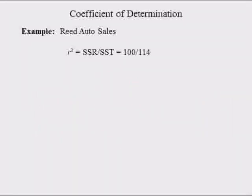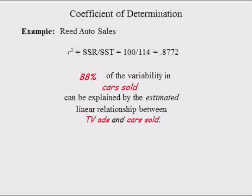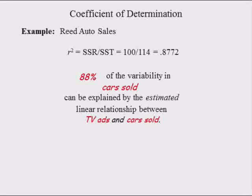The coefficient of determination is equal to the sum of squares due to regression divided by the total sum of squares, which equals 100 divided by 114, or 0.8772. The interpretation is that the coefficient of determination times 100% of the variability in y can be explained by the estimated linear relationship between x and y. Since the coefficient of determination times 100% is approximately 88%, and variable y is cars sold and variable x is TV ads, 88% of the variability in cars sold can be explained by the estimated linear relationship between TV ads and cars sold.